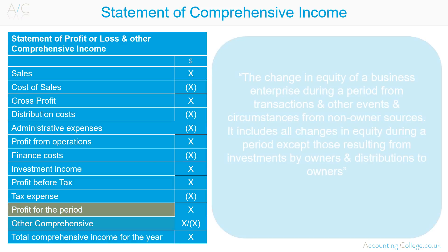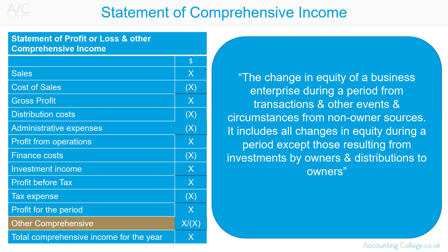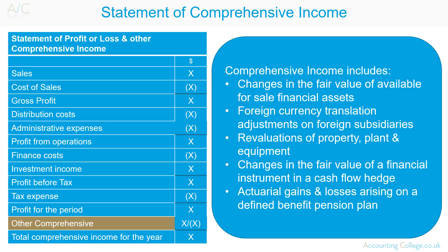Other comprehensive income includes all charges that are not permitted to be included in the profit and loss. The Financial Accounting Standards Board defines comprehensive income as the change in equity of a business enterprise during a period from transactions and other events and circumstances from non-owner sources. It includes all changes in equity during a period except those resulting from investment by owners and distributions to owners. Other comprehensive income is usually unrealised income that reflects a re-measurement because of movements in price or valuation of assets, and includes items such as changes in the fair value of available-for-sale financial assets, foreign currency translation adjustments on foreign subsidiaries, and revaluation of property, plant and equipment.